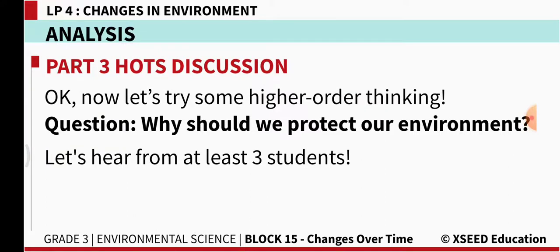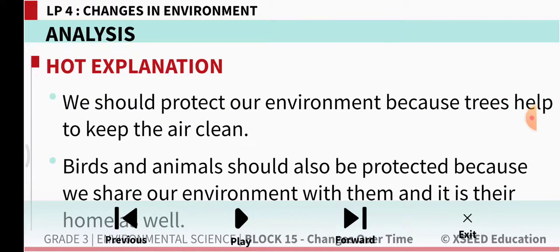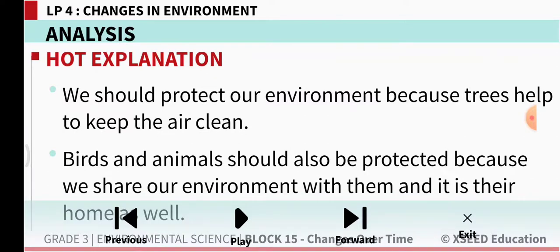Part 3 — Higher Order Thinking. Why should we protect our environment? We should protect our environment because trees help to keep the air clean. Birds and animals should also be protected because we share our environment with them and it is their home as well. The planet Earth is not only our home, but also the home for plants and animals.